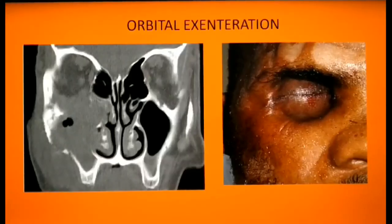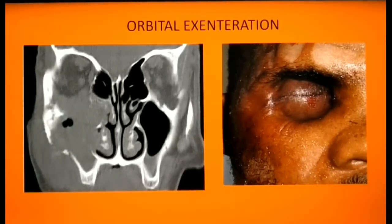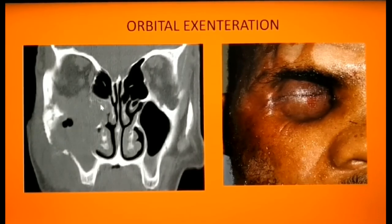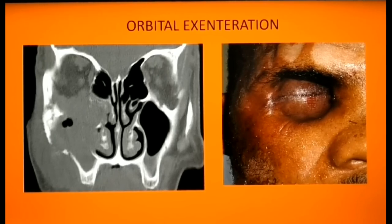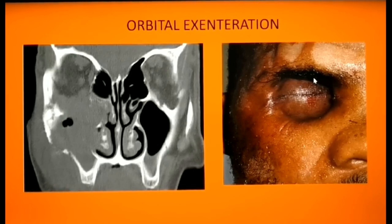Orbital exenteration is indicated when the tumor has invaded the orbital fat or surrounding muscles. As seen in this CT, the tumor has invaded the orbital contents. Whenever orbital exenteration is performed, try to preserve both eyelids as much as possible; here the eyelids have been preserved and sutured together.